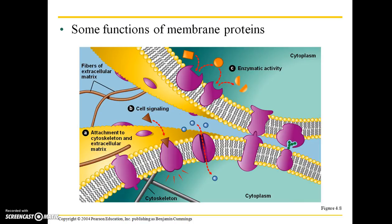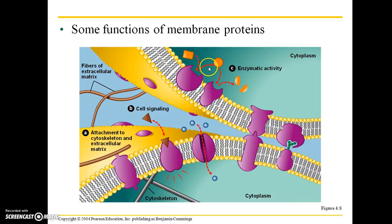Enzymatic activity — so if you have an enzyme, which is a type of protein that needs to, for example, break down a food such as lactose, it's going to be spanning that lipid bilayer, and it's going to take the raw product — in this example, lactose — and break that down into its constituent sugars for digestion.